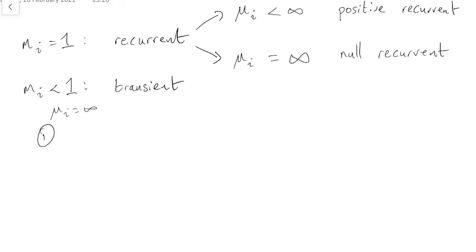But the first non-surprising fact is that within a recurrent class, either everything is positive recurrent, or everything is null recurrent. That's the same thing as before, that within a class, everything has the same properties. In a recurrent class, either every state is positive recurrent or every state is null recurrent.